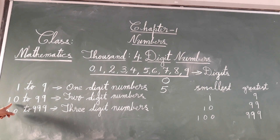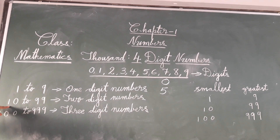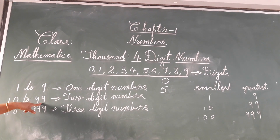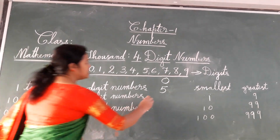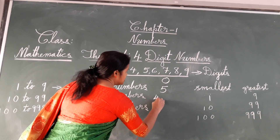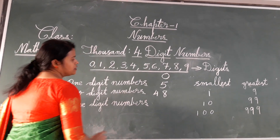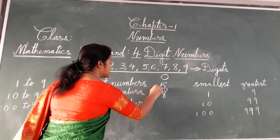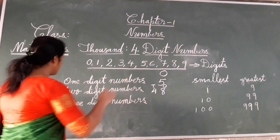Now moving to two digit numbers: two digit numbers begin from 10 and end with 99. These numbers are called two digit numbers. For example, I am going to write 48. This number is called a two digit number because it has two places — that is, ones place and tens place.